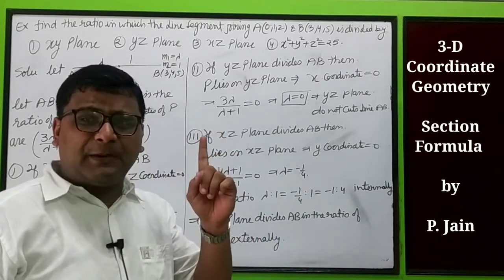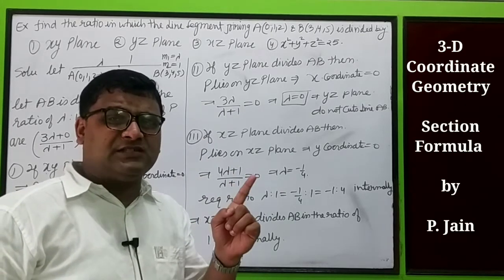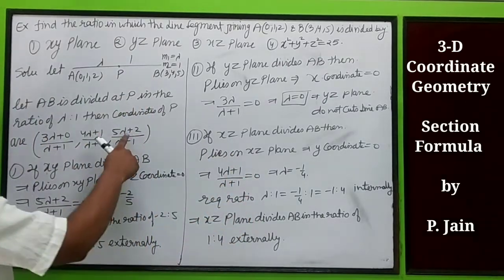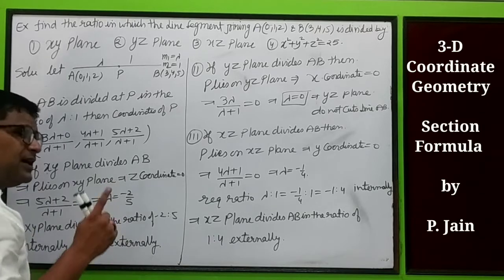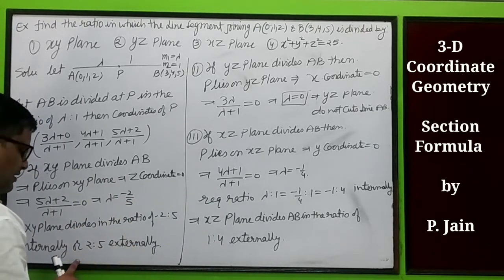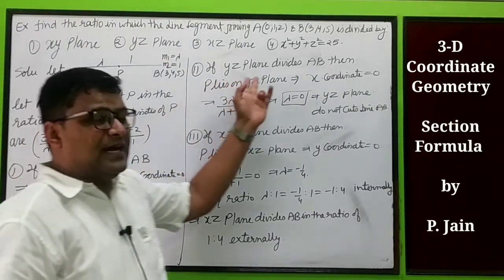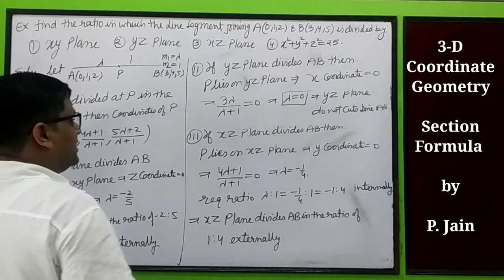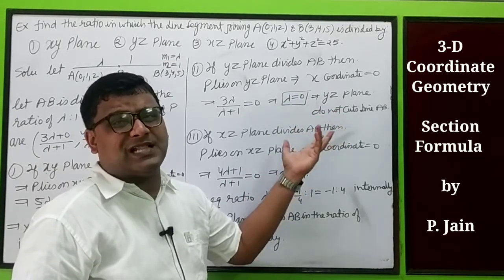First case: the xy-plane divides AB. If P lies on the xy-plane, the z-coordinate is 0. So (5λ+2)/(λ+1) = 0, giving λ = -2/5. The xy-plane divides it in the ratio -2/5 is to 1, or -2 is to 5 internally. Removing the minus sign, the xy-plane divides it in the ratio 2 is to 5 externally. Second case: the yz-plane divides AB, so x-coordinate of P = 0. Then 3λ/(λ+1) = 0 gives λ = 0, meaning the yz-plane does not divide this line segment since no valid ratio is obtained.